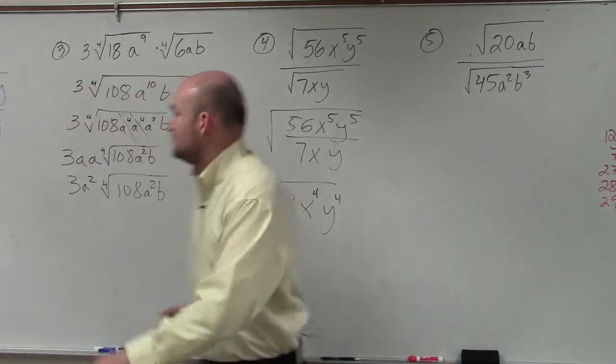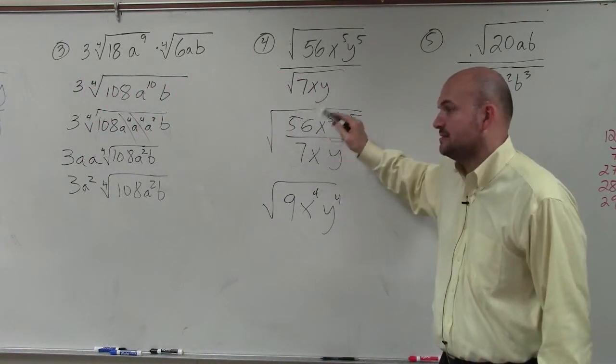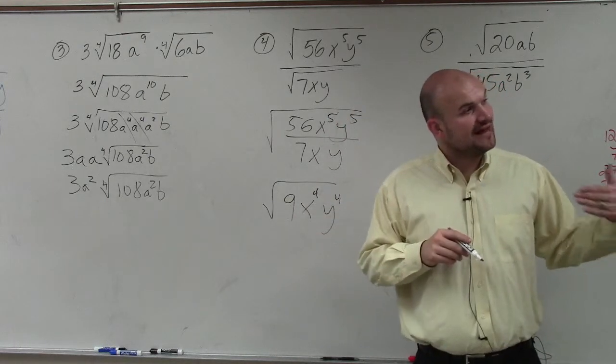You said 7 times 8. 7 divides into 56, so 9 times. Now let's go and simplify each one of these.